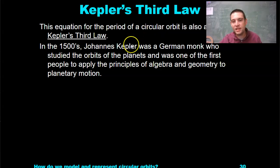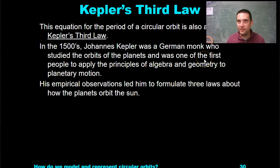In the 1500s, Johannes Kepler was a German monk who studied the orbits of the planets and was one of the first people to apply the principles of algebra and geometry to planetary motion. In the 1500s, you had a lot of people starting to really apply some of the scientific principles to the sky.